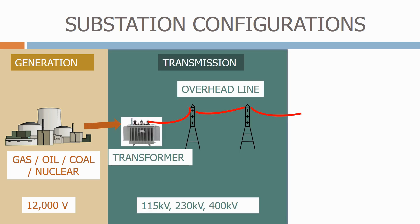We then have the transmission network, where the 12,000 volts produced by the power station is stepped up to a higher voltage using a transformer. We step up the voltage to minimise the losses on the network and increase the amount of power that can flow through it. The power is then distributed over the transmission network using overhead lines and cables. The typical transmission voltages are 115 kV, 230 kV or 400 kV.